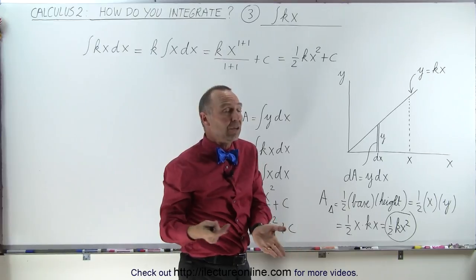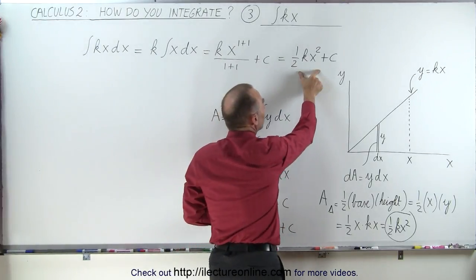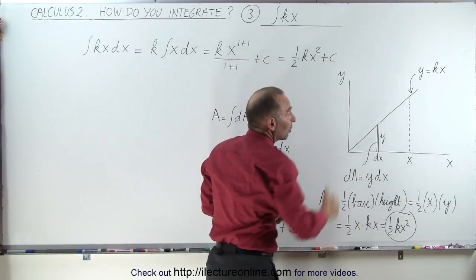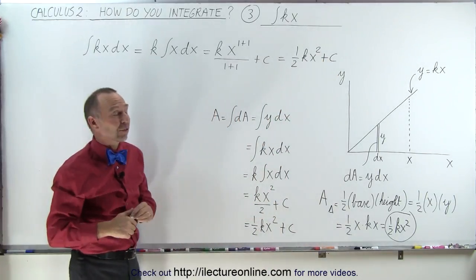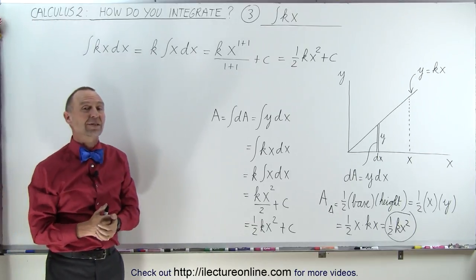We add the plus C because there is an unknown constant there that disappears when we take the derivative of this. So when we integrate, we must put it in there just to cover our bases. And that's how we think of the integral of kx times dx.